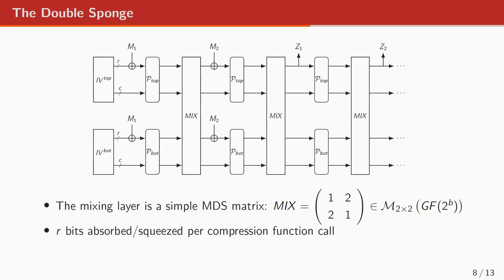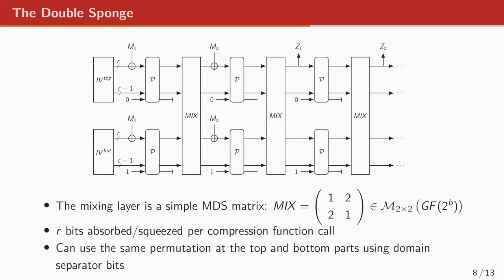Just like for the sponge, the top and bottom parts are split into outer and inner parts. The same message block is absorbed both at the top and at the bottom part — it's not possible to absorb a different message block, because then the probability of full-state collision would downgrade to a birthday bound in the capacity. Similarly for squeezing, R bits only are extracted at a time. It was not possible to absorb on the bottom part either, because our simulator then wouldn't be able to provide consistent answers. We have an indifferentiability proof where the top and bottom permutations are assumed to be sampled uniformly at random independently, but the proof carries over when the same permutation is used for both, sacrificing one bit for domain separation.